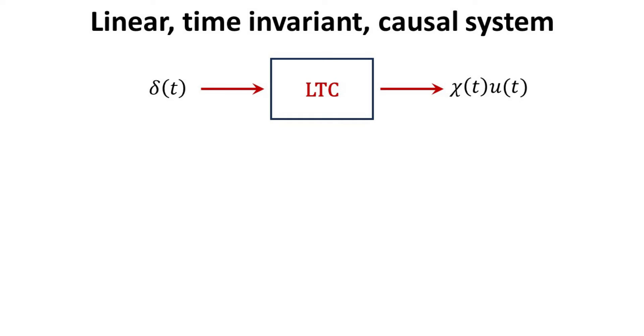For a causal system, the impulse response of the system must only rely on the present and past values of the input to determine the output. This requirement is a necessary and sufficient condition for causality.